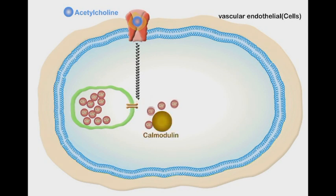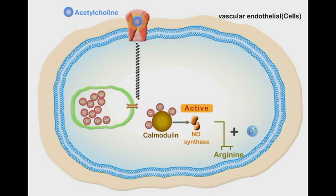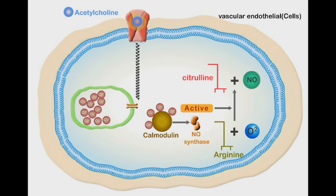Calcium ions bind to their messenger protein calmodulin. The calcium-calmodulin complex activates the nitric oxide synthase enzyme. The active form of this enzyme catalyzes the conversion of the arginine amino acid and oxygen into citrulline and a nitric oxide molecule.